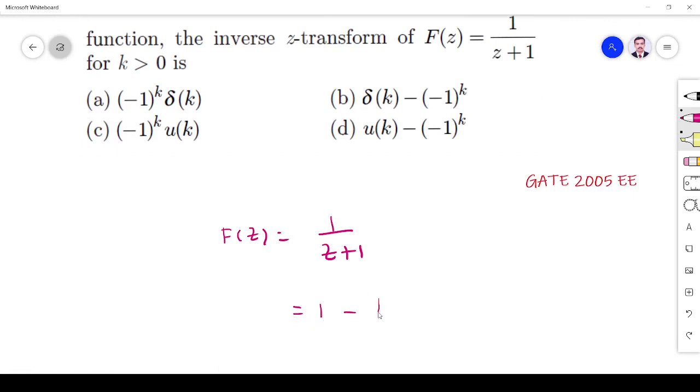If I write 1/(z+1) as 1 minus z/(z+1), then 1 minus z/(z+1) equals (z+1-z)/(z+1), which is equal to 1/(z+1). So I write like this. Why I write like this?